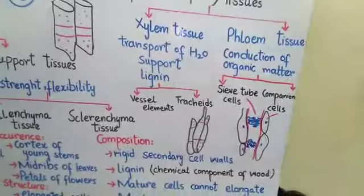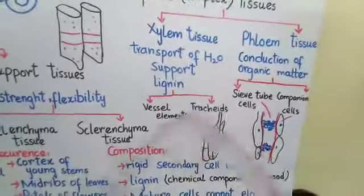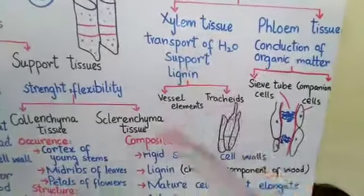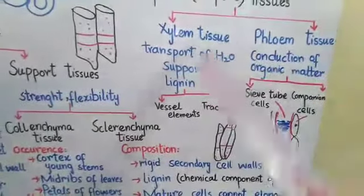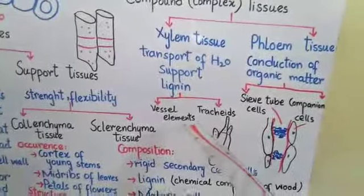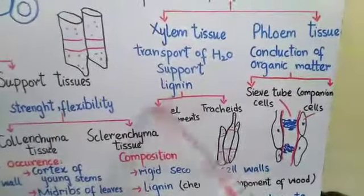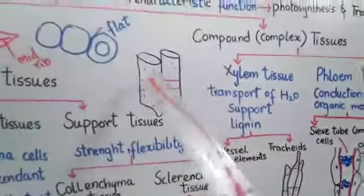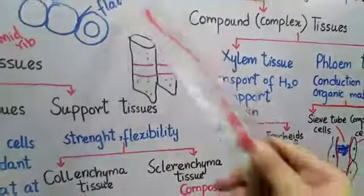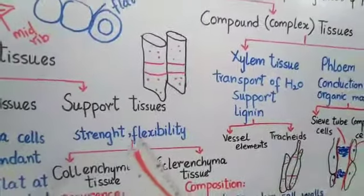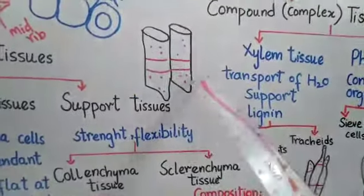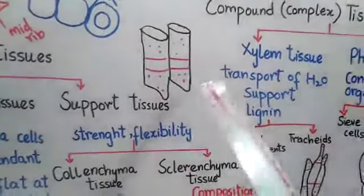Two types of cells are found in xylem tissue: vessel elements and tracheids. Vessel elements are cells with thick secondary cell walls. As shown here, the secondary wall is thick and they lack end walls — the end walls are absent. These vessel elements join together to make long tubes.